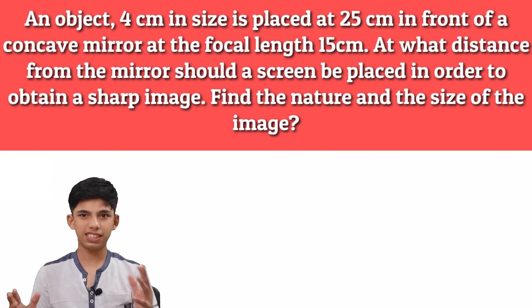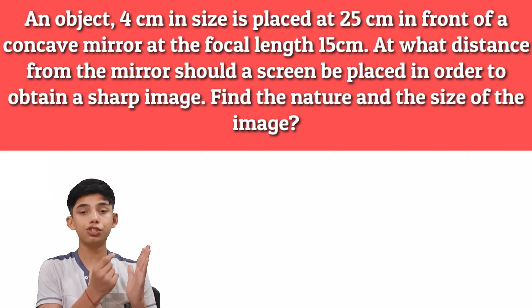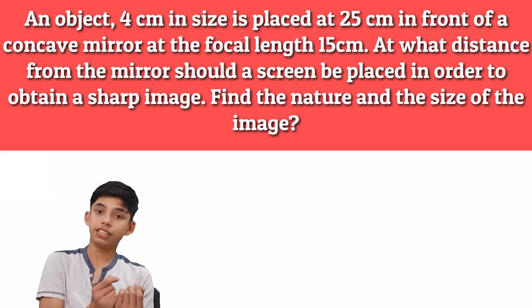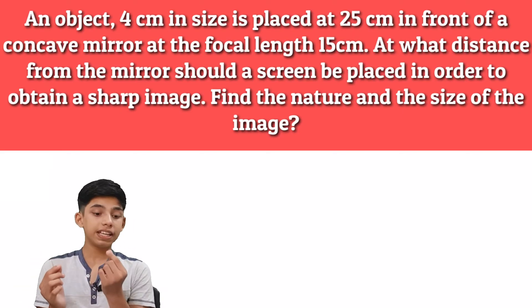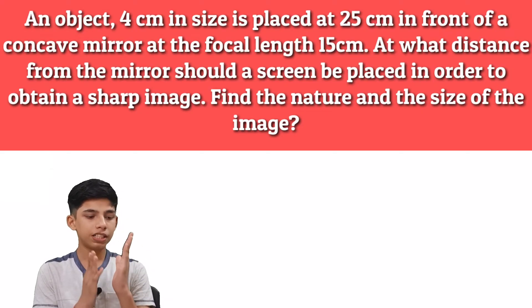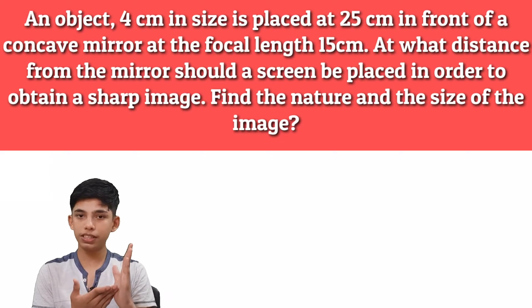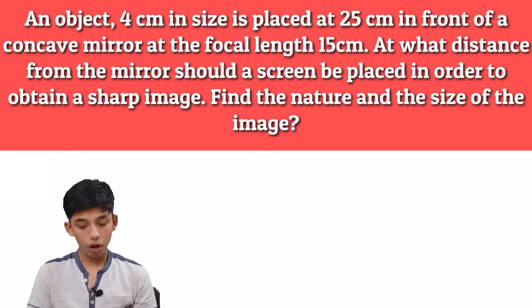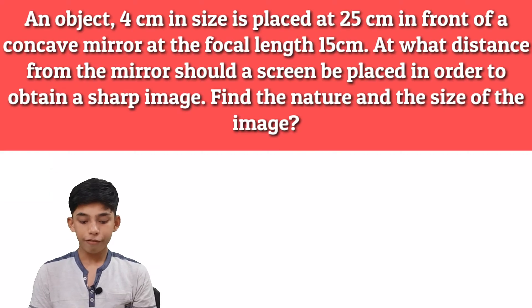What does this mean? They are simply saying where should we keep the screen so that we get a sharp image. By the way they are asking what is the image distance. If we can get the image distance then at that point we can keep our screen and get a sharp image. Now they are saying find the nature and the size of the image.